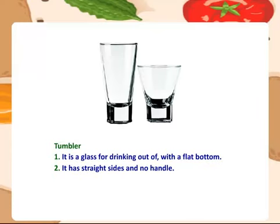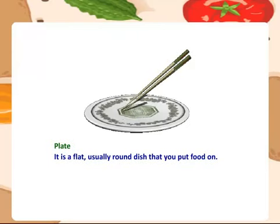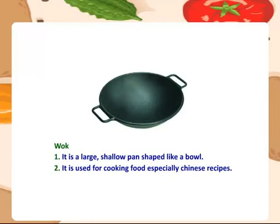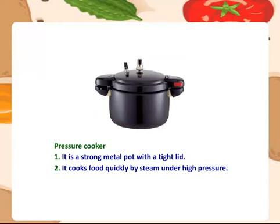Tumbler — it is a glass for drinking out of with a flat bottom. It has straight sides and no handle. Plate — it is a flat, usually round dish that you put food on. Wok — it is a large shallow pan shaped like a bowl. It is used for cooking food, specially Chinese recipes. Pressure cooker — it is a strong metal pot with a tight lid. It cooks food quickly by steam under high pressure.